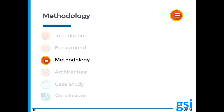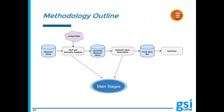Next, we will describe the methodology followed in order to achieve the automatic generation of questions. The diagram portrays the different stages to produce and display questions. First, information of museum items is processed in the natural language processing and semantic analysis phase, which outputs an enriched version of them. This is then fed to the semantic quiz generation stage, which will produce the trivia quiz question set. In the following slides, we will explain the two stages that bring about the creation of questions in an automatic manner.